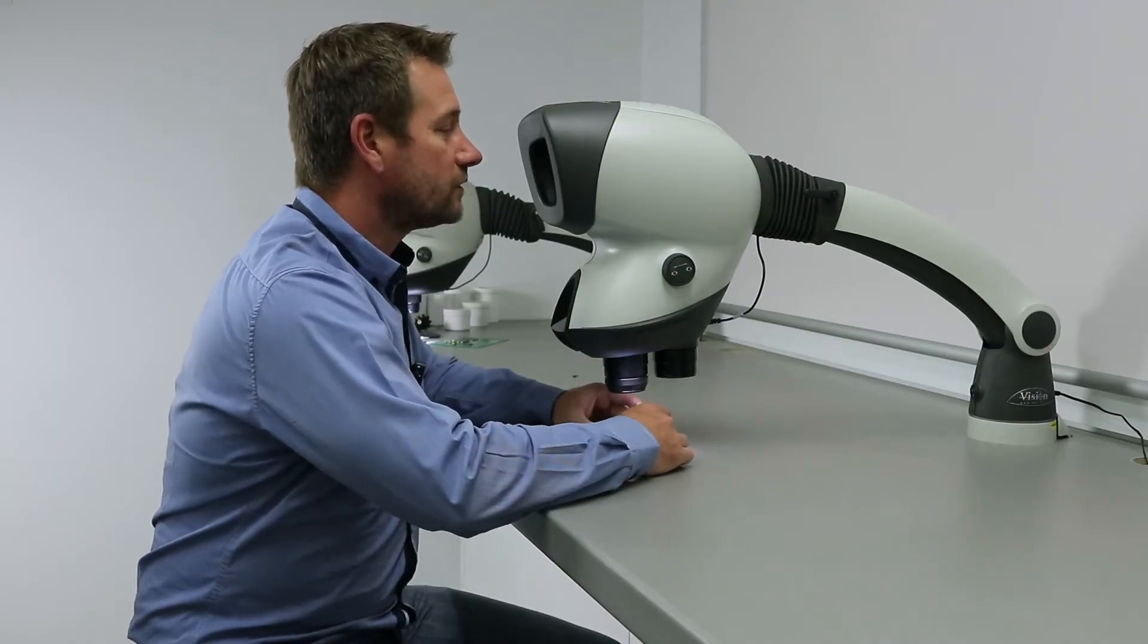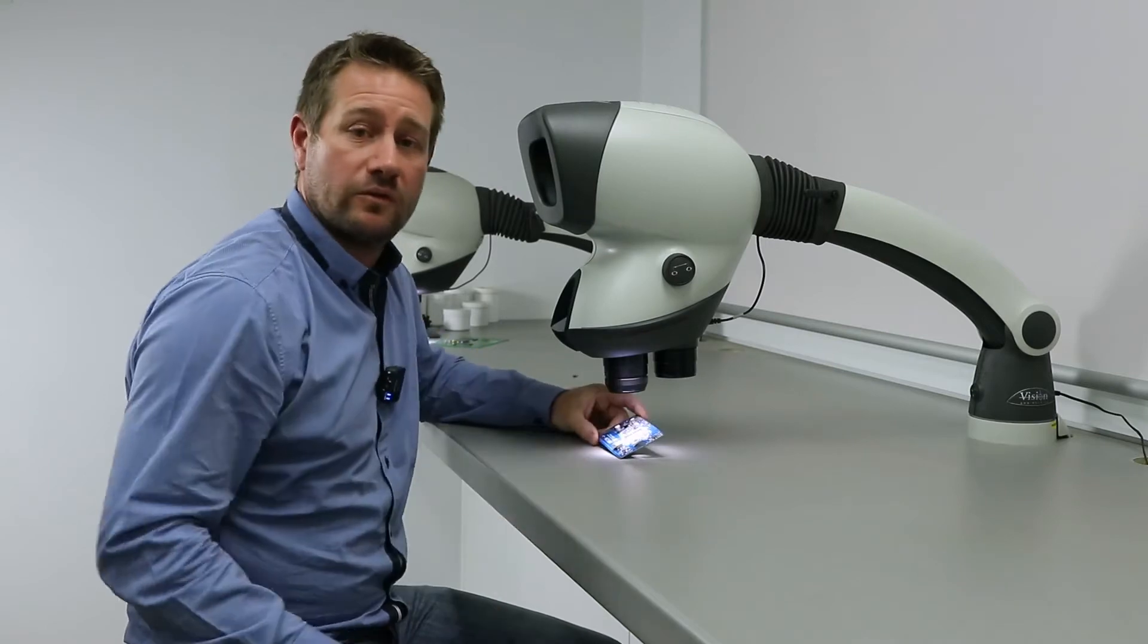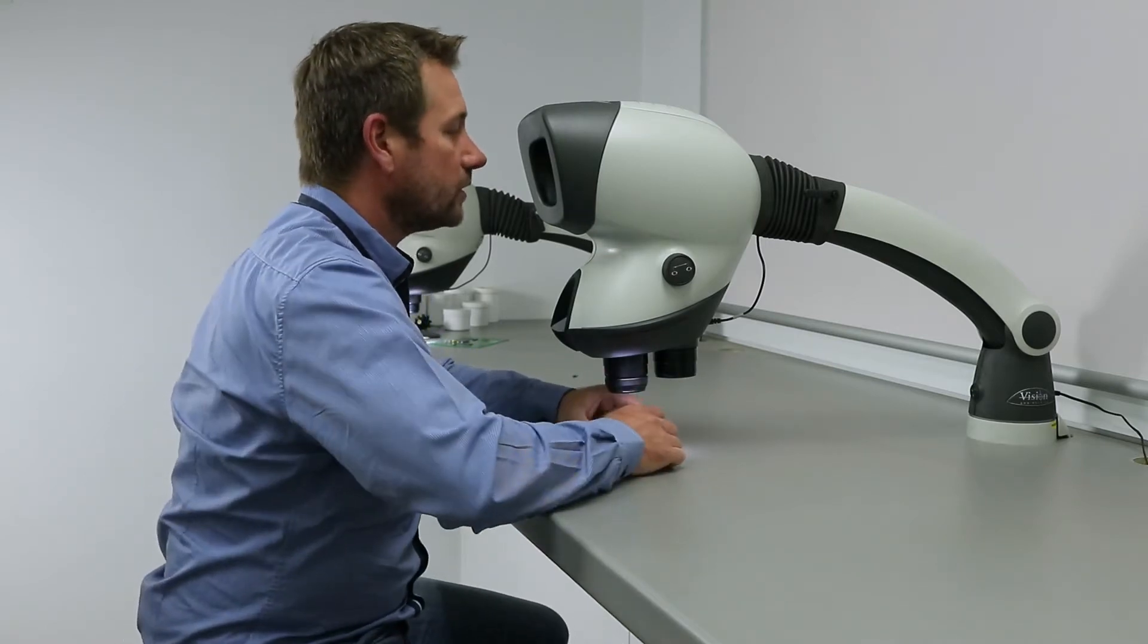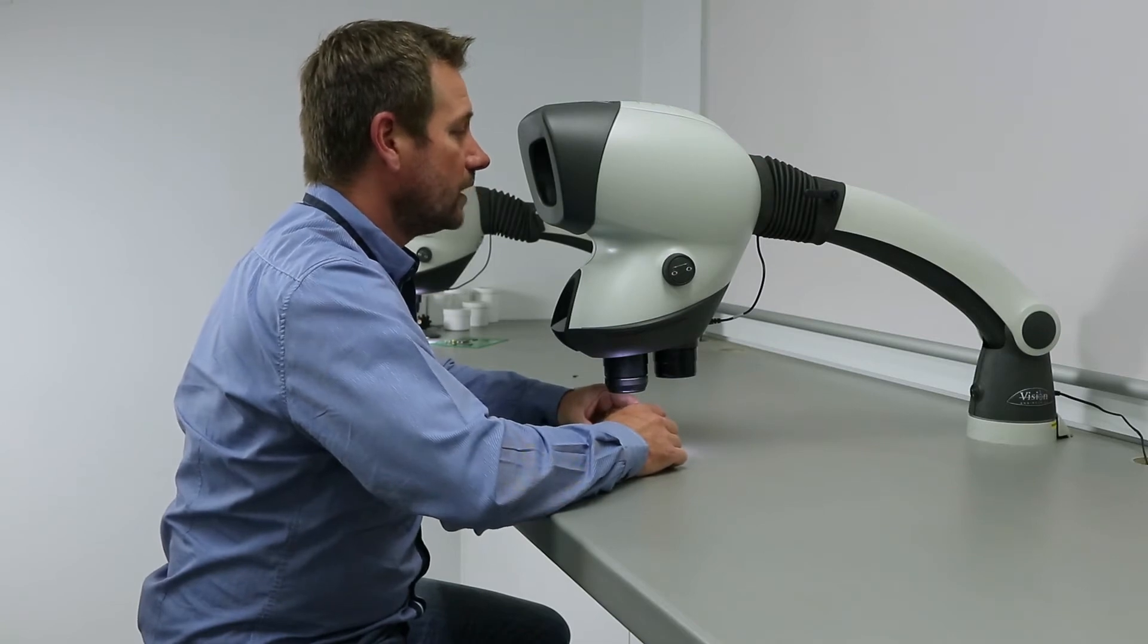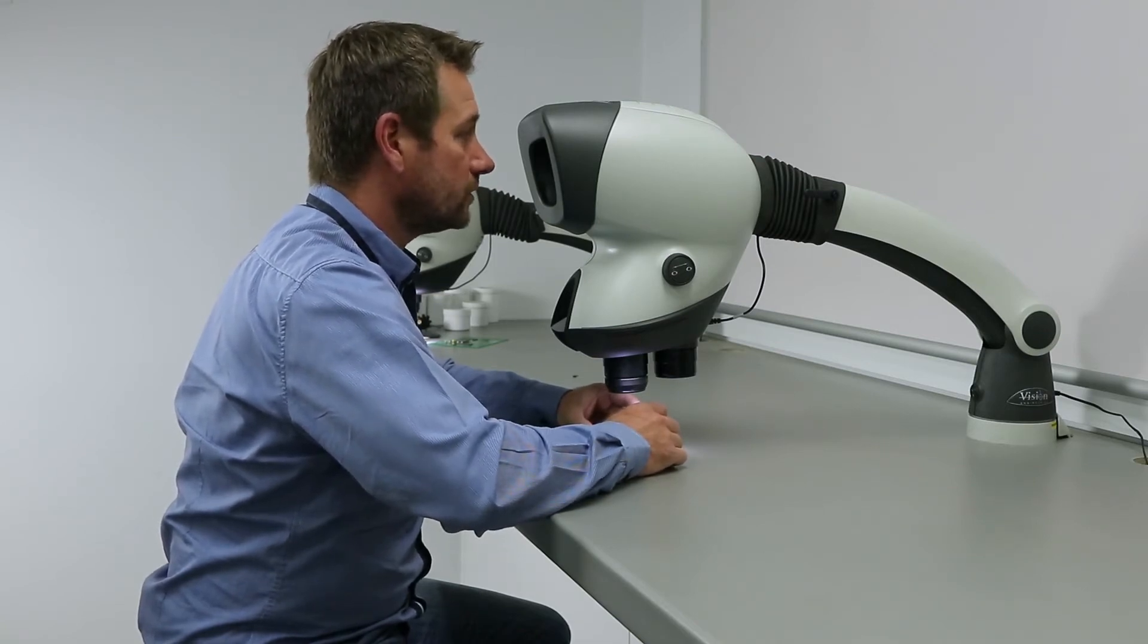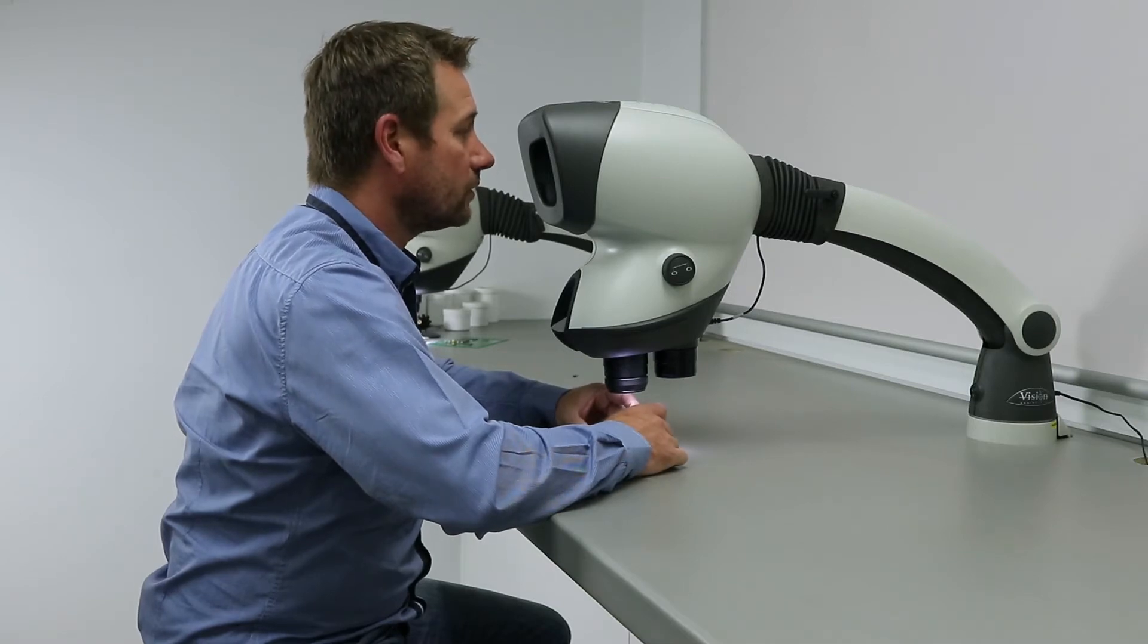The benefits and features of the Mantis Elite or any of the Mantis range is the ergonomics. Here we're able to look through at a PCB and we've got freedom of head movement. We're looking down, looking at the dry solder joints if there are any. We're doing a good quality inspection.